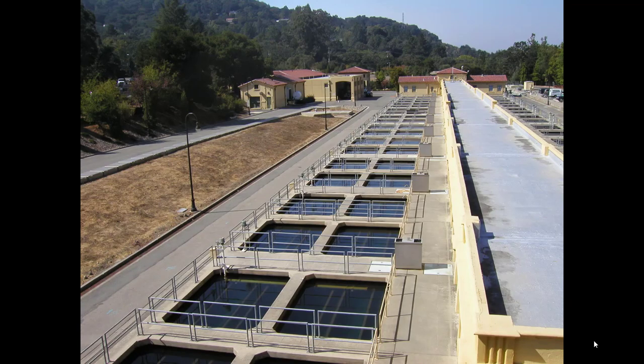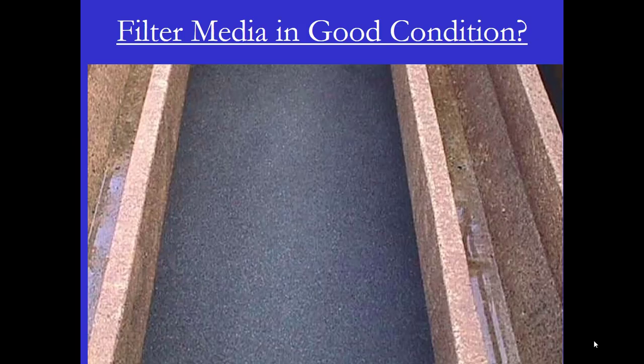The filters of a drinking water treatment plant are really the heart of the plant. They're crucial for disinfection and for removing particles, which we measure as turbidity.